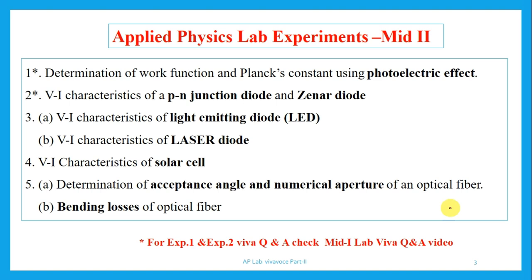Based on different batches, some batches did the P-N junction diode and Zener diode in the first mid, and some did the photoelectric effect. For experiment one and two — photoelectric effect, P-N junction diode, and Zener diode — the viva questions and answers are available in the first mid lab viva video, and the link will be provided. For this semester, we will focus on the voltage-current characteristics of a light emitting diode (LED), voltage-current characteristics of a laser diode, voltage-current characteristics of a solar cell, and the acceptance angle and numerical aperture of optical fiber, including bending losses.